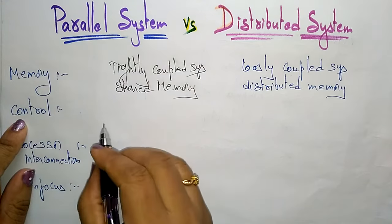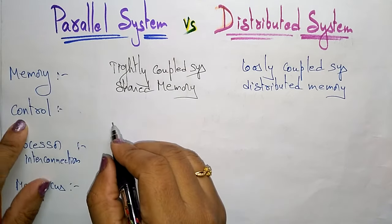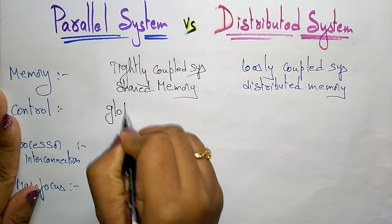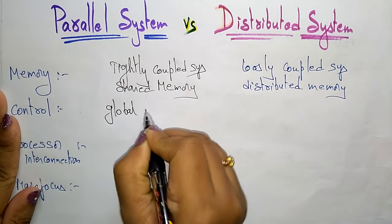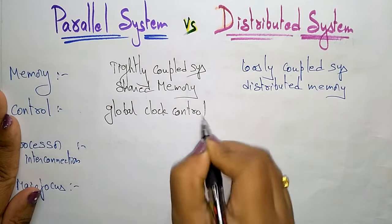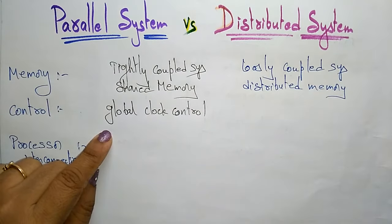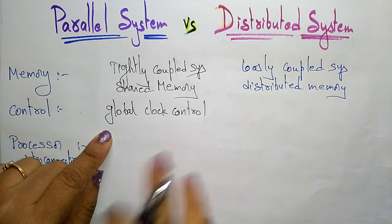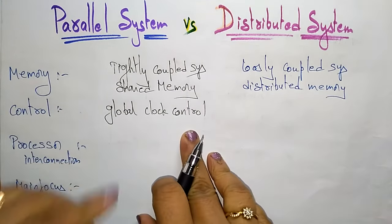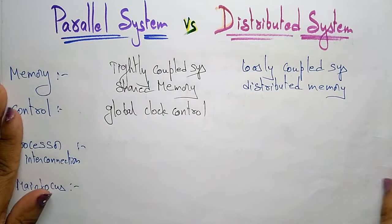If you consider control, the parallel system will have global clock control. There is a global clock control, so all the CPUs will share only this clock control — it is present globally.